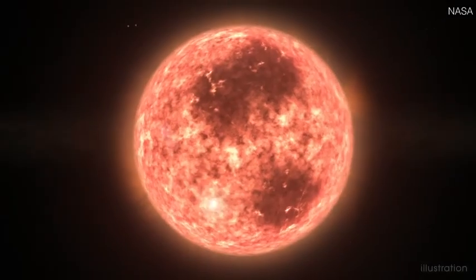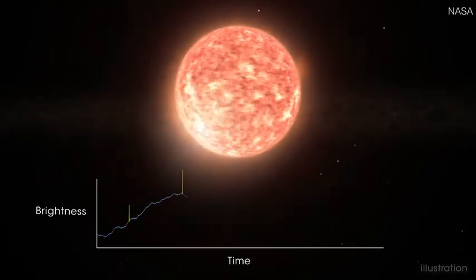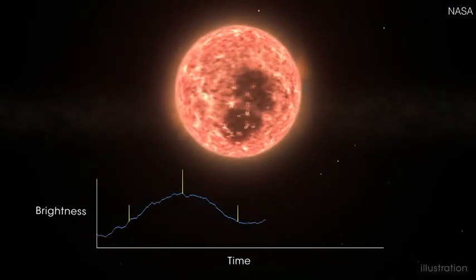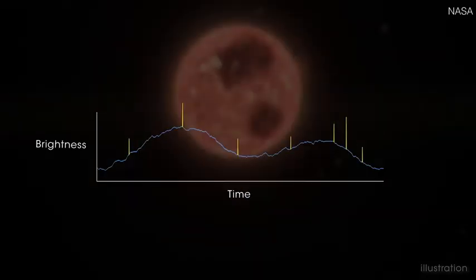The planet's host star is very young. Flares and other phenomena also alter its brightness, which complicated the search. In order to find AUMIC b, the science team had to remove these effects from the data.